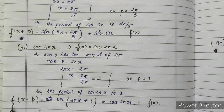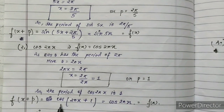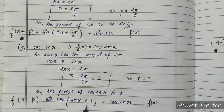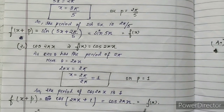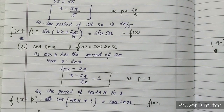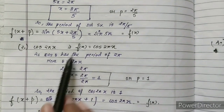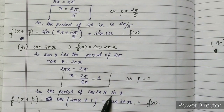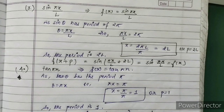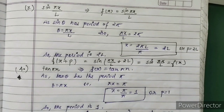We conclude by writing: f(x + p) = cos(2π(x + 1)) = cos(2πx) = f(x). Therefore, the period equals 1.